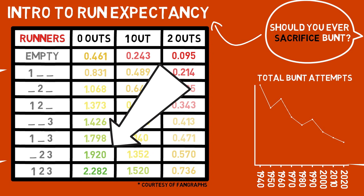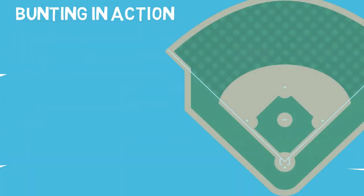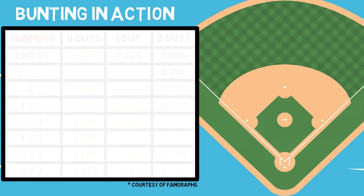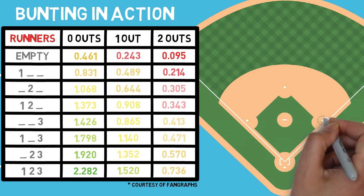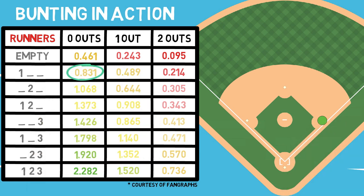That doesn't fully explain why this chart is really useful though. Starting with a runner on first base with no outs — you will find this situation on our chart right here — with an average of .831 runs scored from this situation. This does not say that 83% of the time a runner will score; it is merely giving us the amount of runs that are typically scored during an inning in which this situation occurs. Those odds will always be changed by what the next hitter does.